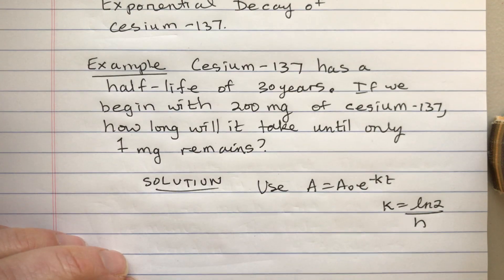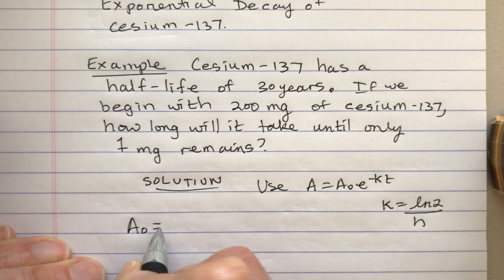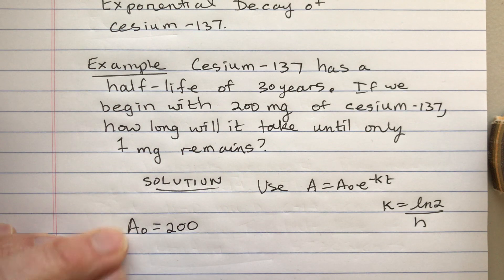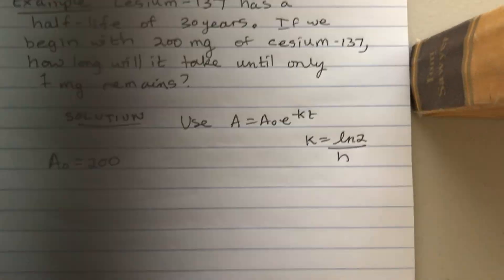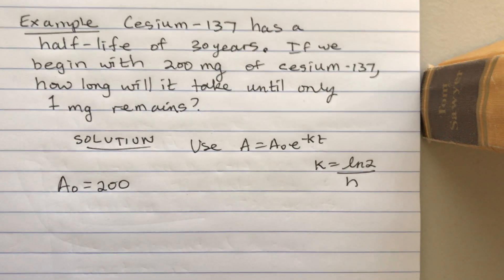For this situation, A₀ is equal to our initial amount, which is 200. So that's the starting amount. We start at 200.